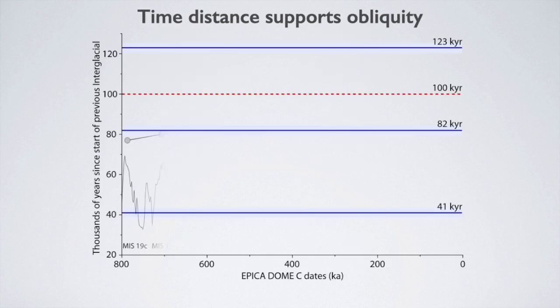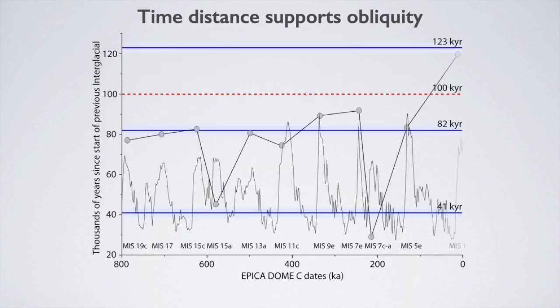Measuring the temporal distance between the start of each interglacial and the next for the last 800,000 years, the result is that, with small irregularities, it reflects multiples of 41,000 years — the frequency of obliquity. The 100,000-year cycle is nowhere to be seen. Scientists have not yet been able to answer how the small changes in axis tilt produce the massive changes in ice volume that accompany the glacial cycle.